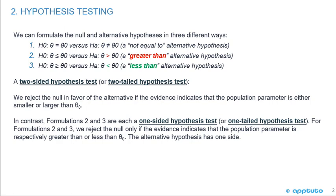With formulation one, the alternative hypothesis is that it's not equal to zero. We reject the null in favor of the alternative if the evidence indicates that the population parameter is either smaller or larger. That's why it's a two-sided or two-tailed hypothesis test.